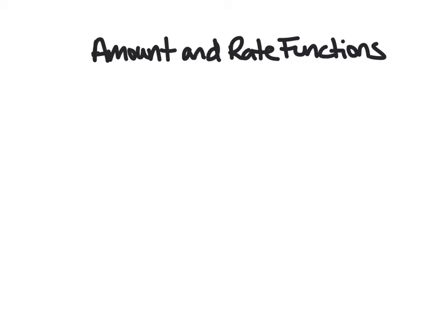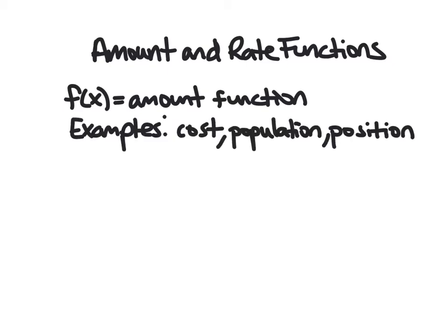Alright, so let's go ahead and talk about what an amount or rate function is first. So for us, we'll have some starting function called f(x). Usually this will be our amount function. So a few examples: it could be cost, population of a community, of anything, your position with respect to a starting point, you could say how many miles east are you of your starting point, and track it where x is time. Any of these are reasonable examples.